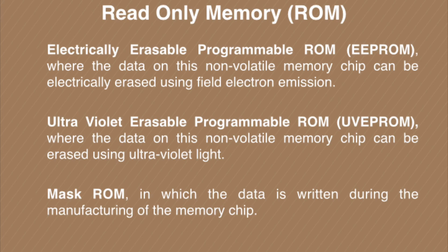In EEPROM, the data on the memory chip can be electrically erased using field electron emission. In UV EPROM, the data on this non-volatile memory can be erased using ultraviolet light. ROMs used to perform predefined functions within a computer are known as Mass Programmable ROM or Mask ROM, in which data is written during the manufacturing of the memory chip.